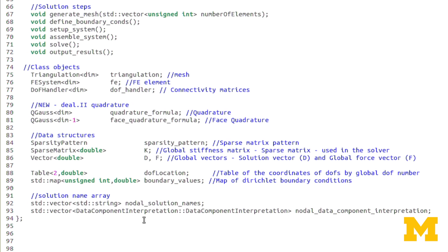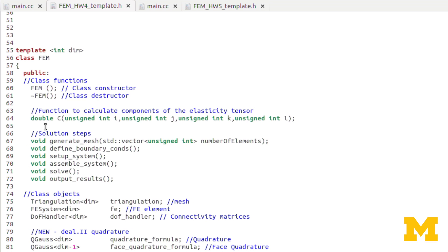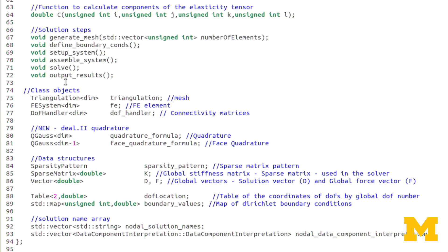We have the same class constructor and destructor. Here I have a function called c, this is our elasticity tensor. DL2 does have the capability of creating a fourth order tensor, but I've set it up here as a function where the inputs are just the four indices and it outputs that component of the tensor. The solution steps are all the same as well as these first three class objects. But now we have the DL2 quadrature rules: a quadrature formula for volume integrals and a face quadrature formula for surface integrals.